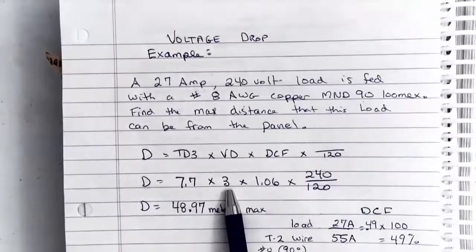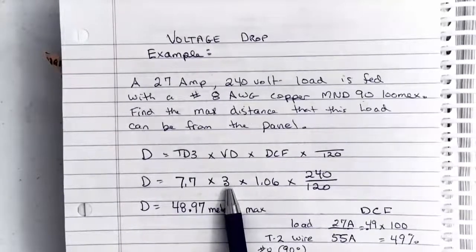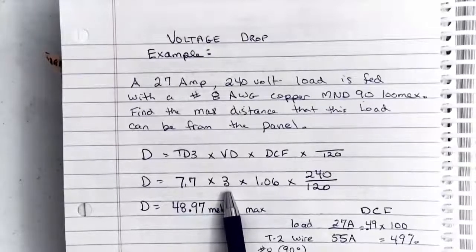My voltage drop, because this is a load fed from a breaker, it is a branch circuit. So the most I can do is 3%. So I put 3 in there.